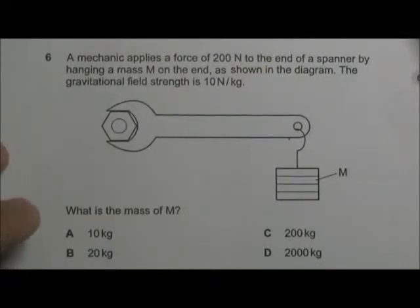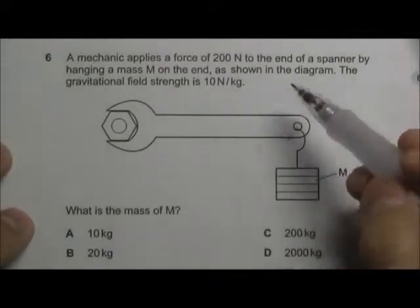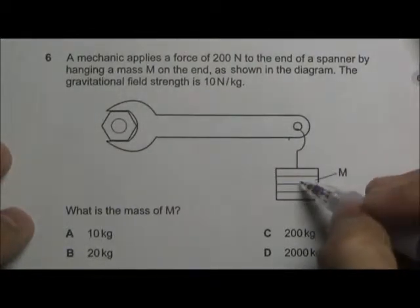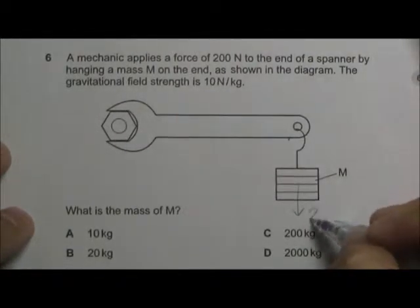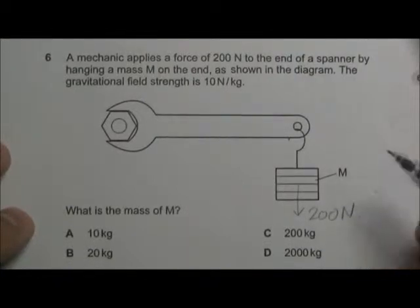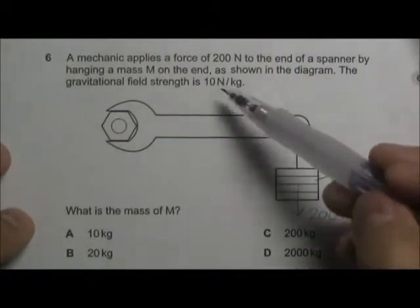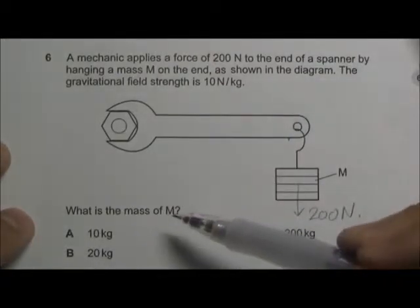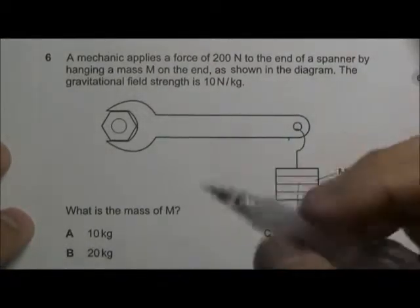This is a very straightforward question. We have a force that is being applied at the end of the spanner here, 200 N. We are given the gravitational field strength as 10 N per kg, so we want to find out what is the mass.